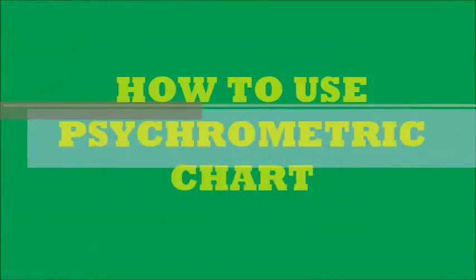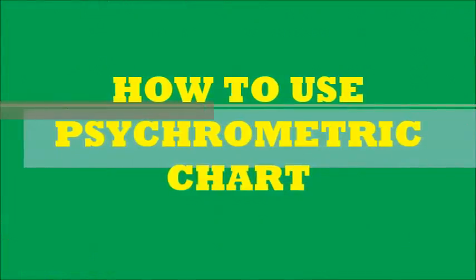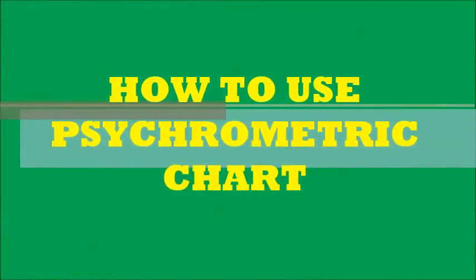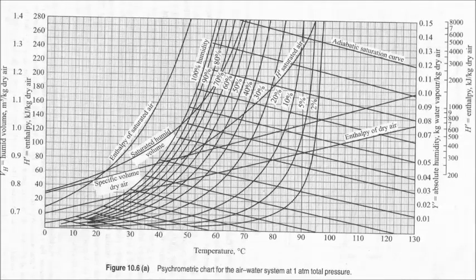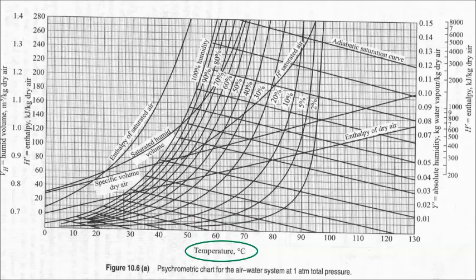During the course of this video, we will be learning how to use the psychrometric chart. Shown is the psychrometric chart for the air-water system, taken from Principles of Mass Transfer and Separation Processes by Binadata.